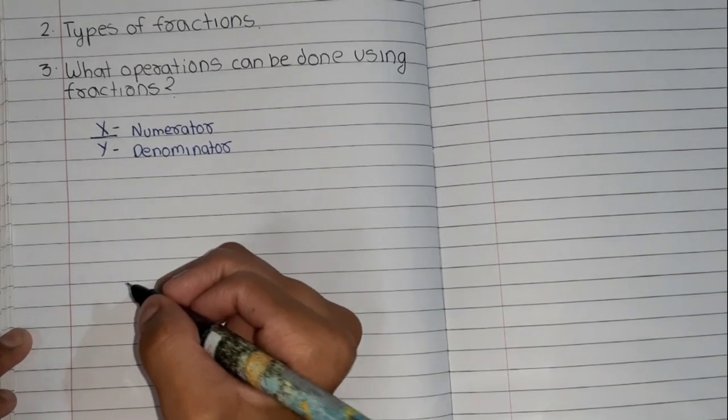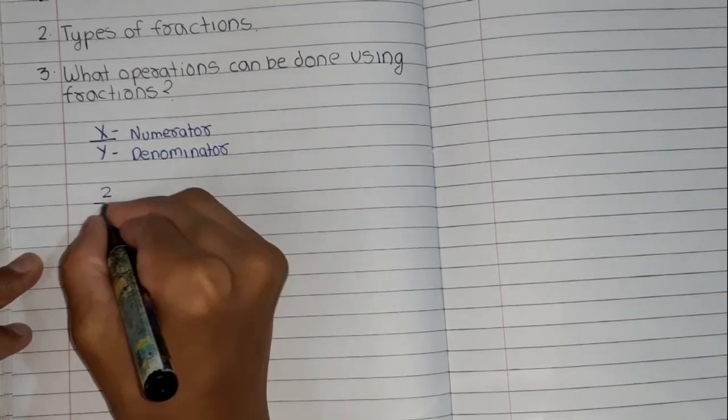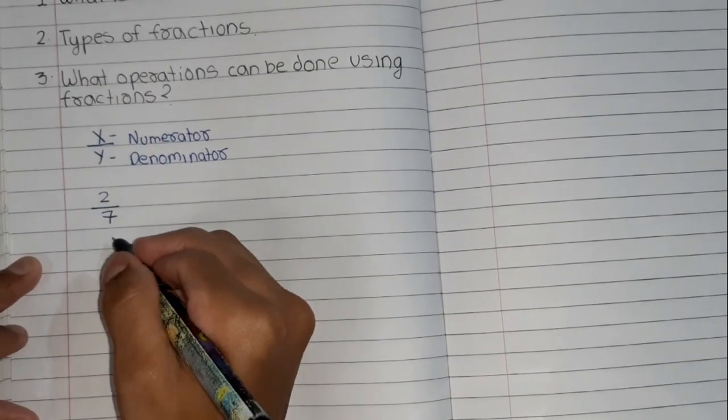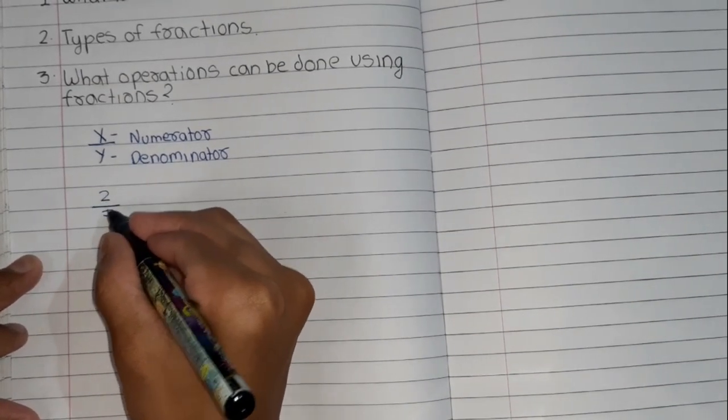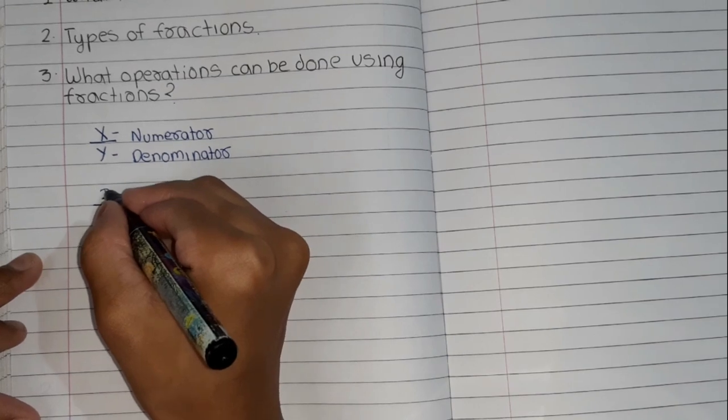Let's take a real example: 2 by 7. So there are 7 parts, out of that 2 parts are taken.